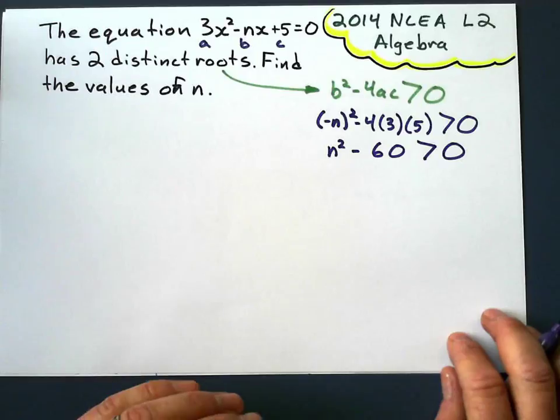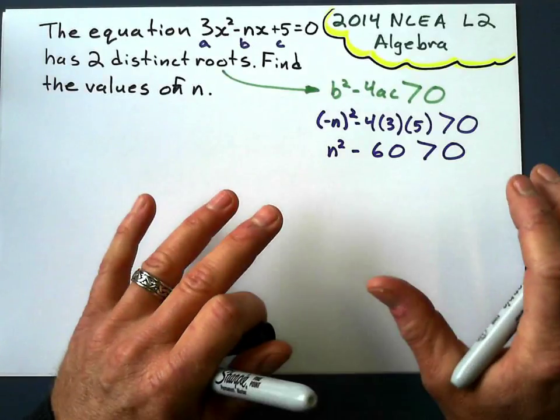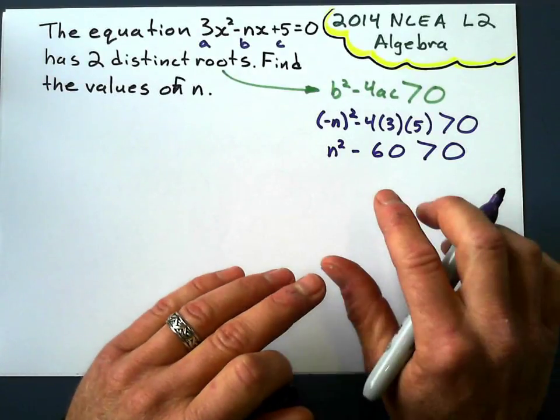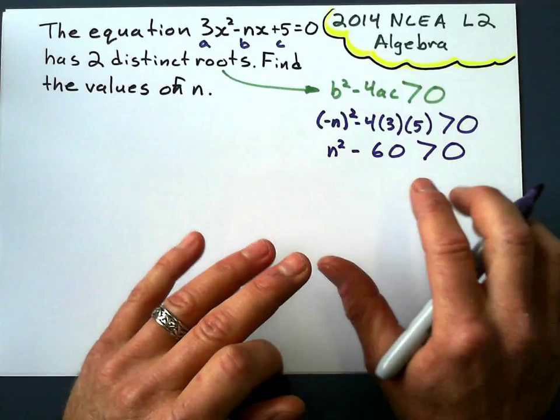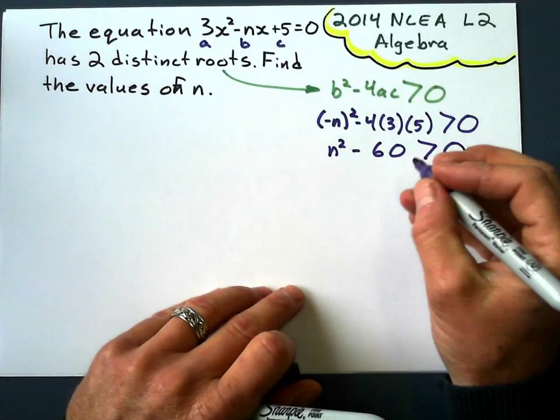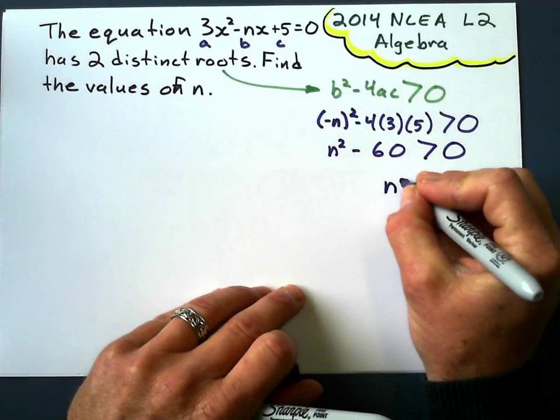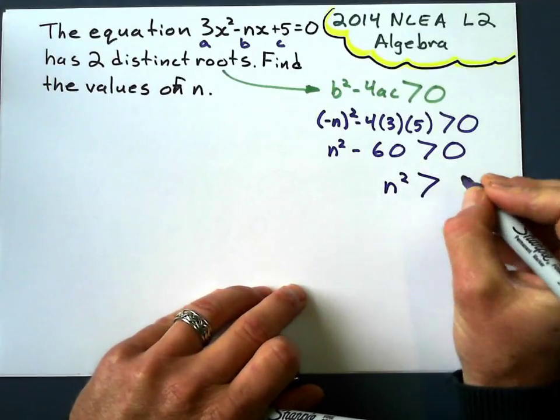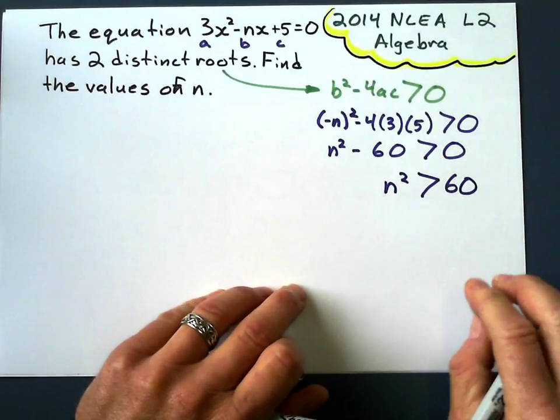All right, now it gets interesting, because now I have quadratic inequalities, and those aren't always easy. So let's just take this step by step. Let's take the negative 60 and put it on the other side, making it positive, so I've got n² is bigger than 60.